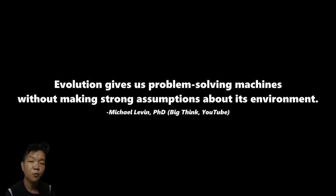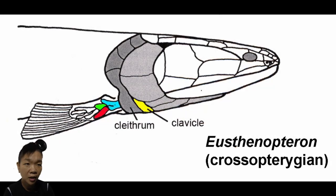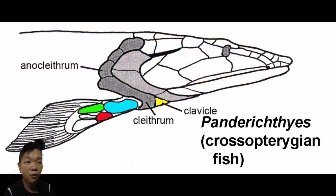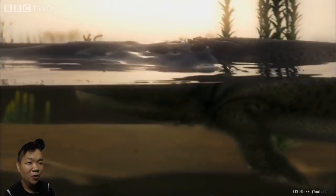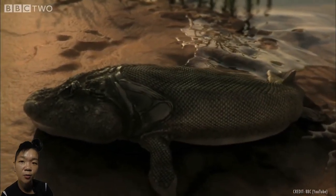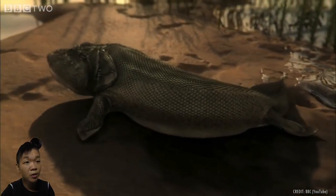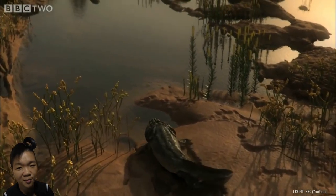The wonderful thing about evolution, as Dr. Michael Levin puts it, is that evolution gives us problem-solving machines without making strong assumptions about its environment — that a particular biological process or structure evolved not just to solve one specific problem. In the evolution of tetrapod limbs, this could mean that fins did not evolve to be exclusively used to push water. Instead, they could also work to push against the ground. That's probably how our Sarcopterygian ancestors used their fins — they walked along the bottoms of streams using their relatively robust fins as pivot points. This may have slowly transitioned into getting out of the water, even for a few minutes at a time, perhaps to escape predators, find new sources of food, or just transfer to a different puddle of water.